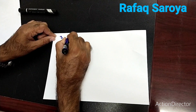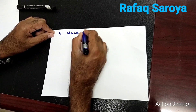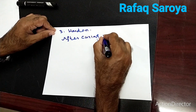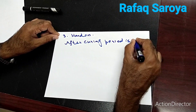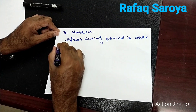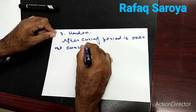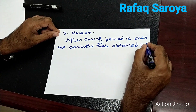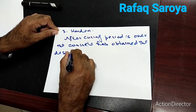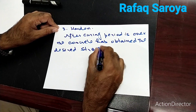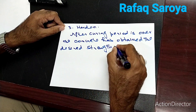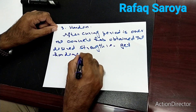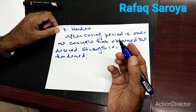The last stage is known as hardened. After the curing period is over, the concrete has obtained its hardened state. When the concrete has been hardened, its purpose is obtained.